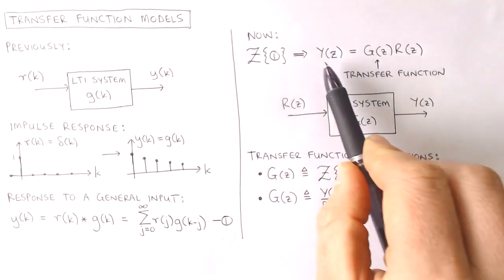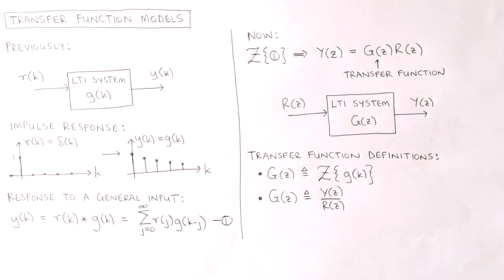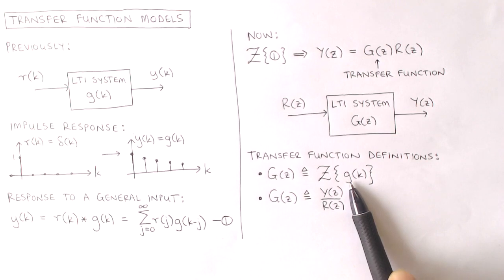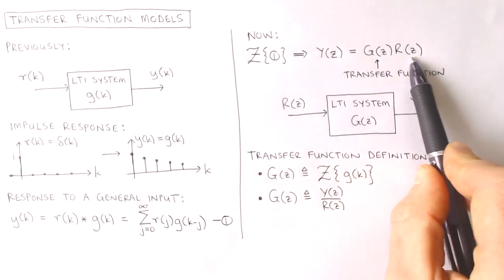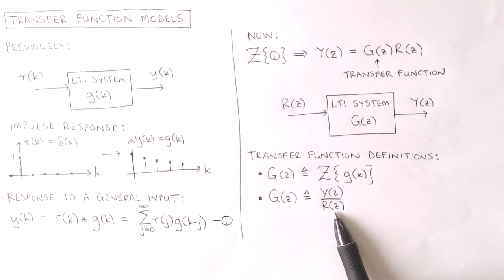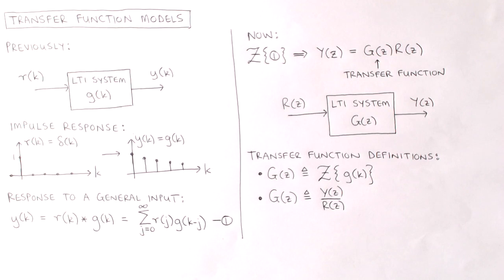We will prove this result at a later stage. The transfer function is commonly defined in two equivalent ways: it is the z-transform of the impulse response, or by rearranging, it is the ratio of the z-transform of the output signal to the z-transform of the input signal. The transfer function gives us an alternative way to calculate the output for a specified input, but more importantly it describes the dynamics of a system in a meaningful way.